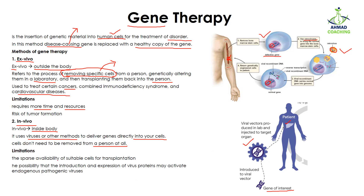However, there are some limitations for the in vivo process. There is sparse availability of suitable vectors for gene transportation — we have retroviruses, but not all viruses are suitable, so options are very limited. Additionally, the introduction and expression of viral proteins may activate endogenous pathogenic viruses, meaning there is always a risk that the virus could trigger another pathogenic pathway in the patient.